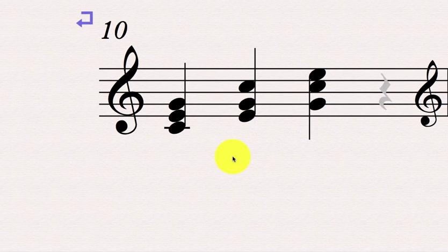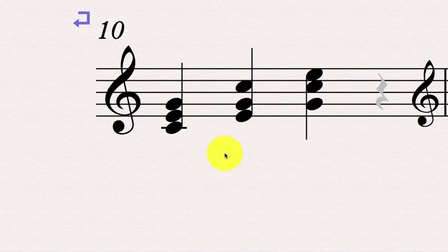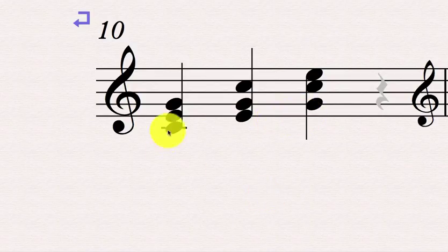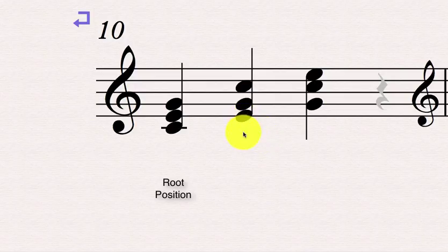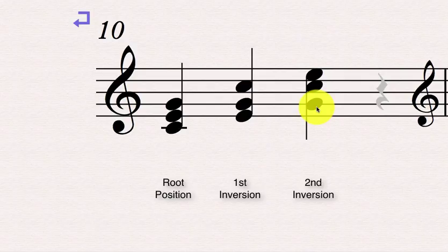So back to triads — here is our C major triad from before, but notice we've got it spelled three different ways. This first way we call root position. The second one, with the third as the lowest sounding note, becomes first inversion. And then this last one, with the fifth as the lowest sounding note, becomes second inversion.